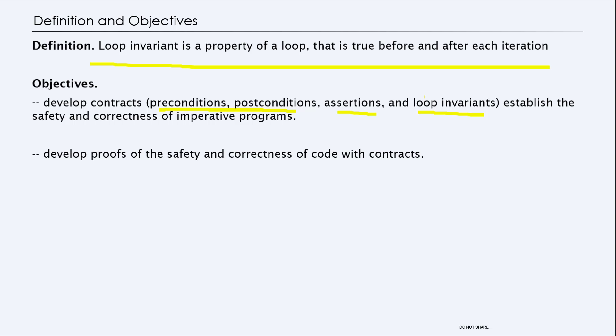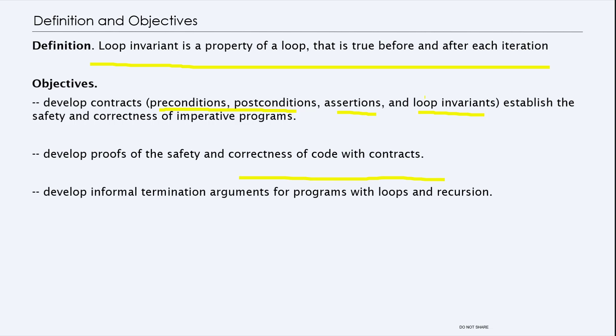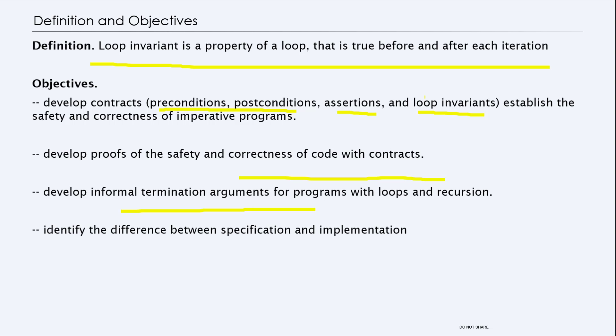We can develop proofs of safety and correctness of the code with these contracts, and eventually develop arguments for termination of the programs — because when you have loops, you have to guarantee that your code will terminate. We can also identify the differences between specification and implementation. If you can prove your specification is correct, then if you follow the right implementation methods, you should have a correct program.